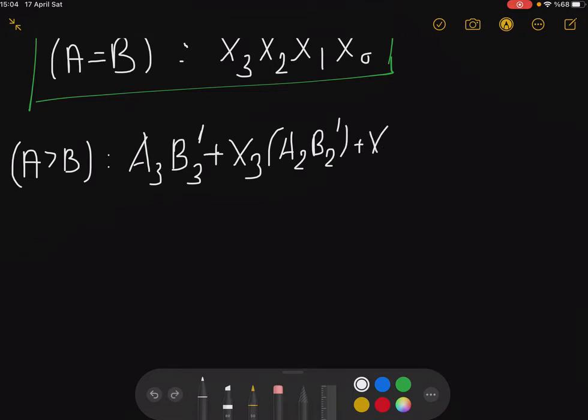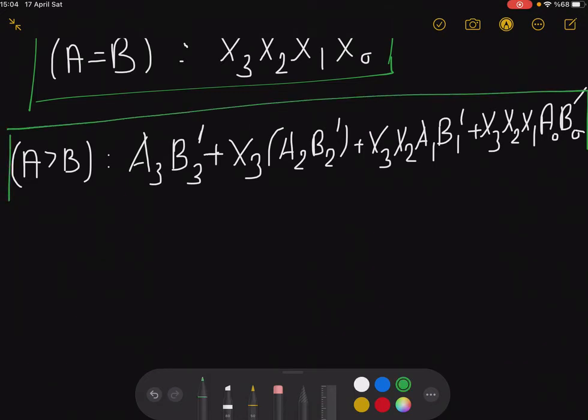So it means that X₃A₂B₂ not in this sense. And if your X₃ and X₂ bits are the same, you go ahead and check for A₁B₁ not. Plus if all of them on the left hand side are equal, you go ahead and check A₀B₀ not. This is how you realize the A greater than B condition.